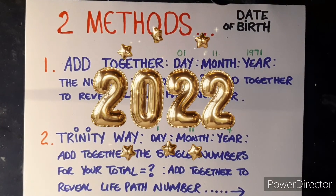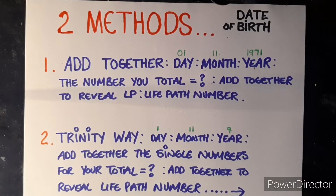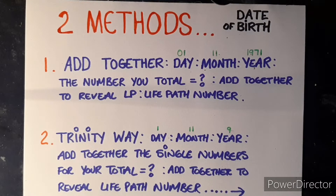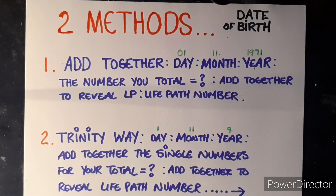Welcome! This is about calculating your life path number. There are two methods I will show you, along with a couple of examples. Basically, we are adding the day, the month, and the year you were born together to reveal a total number. For example, if that was 45, you do four plus five to reach nine — that will be your life path number. That's one way: add up all the numbers singly in your date of birth.